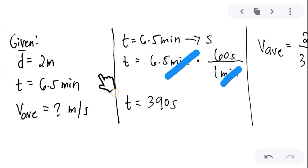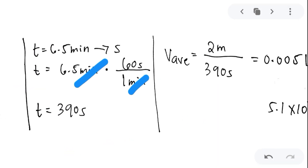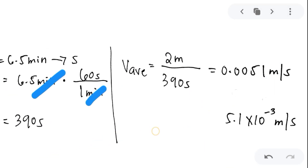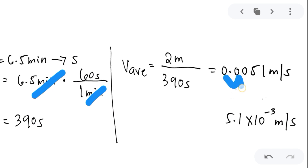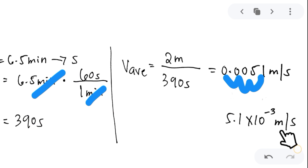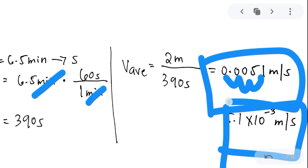Now we have the displacement and time in the desired units, so we can calculate the average velocity. The total displacement is 2 meters over the time of 390 seconds. Dividing that gives 0.0051 meters per second, which can also be written as 5.1 times 10 to the negative 3 meters per second. Either form is correct.